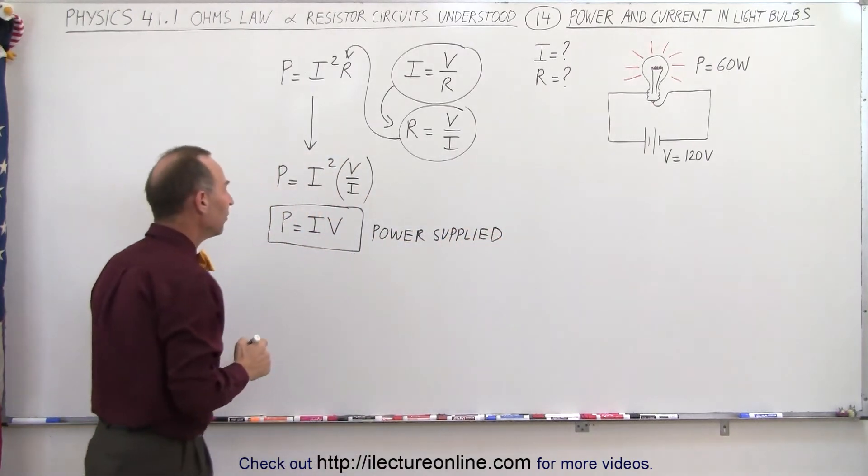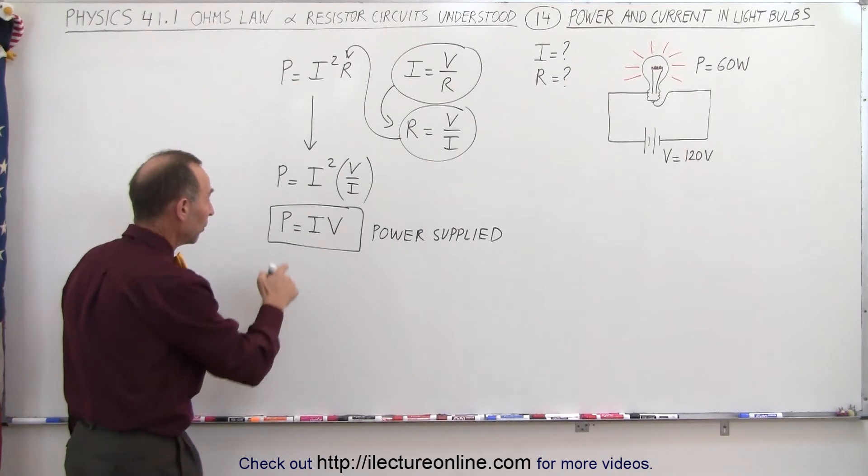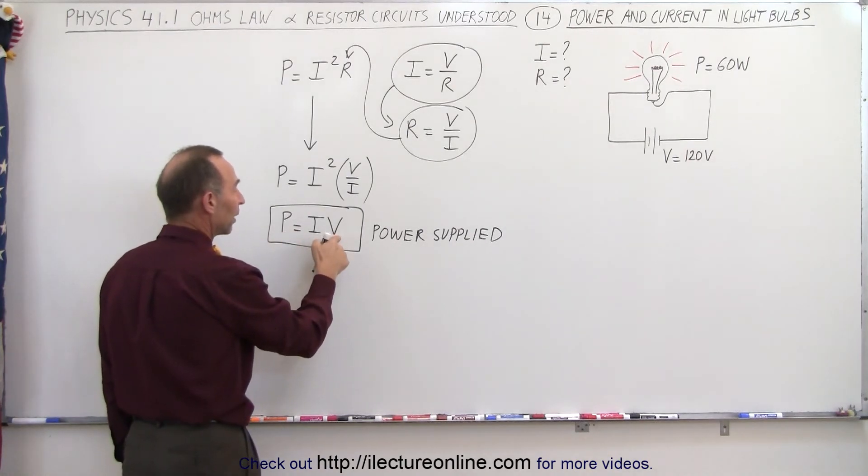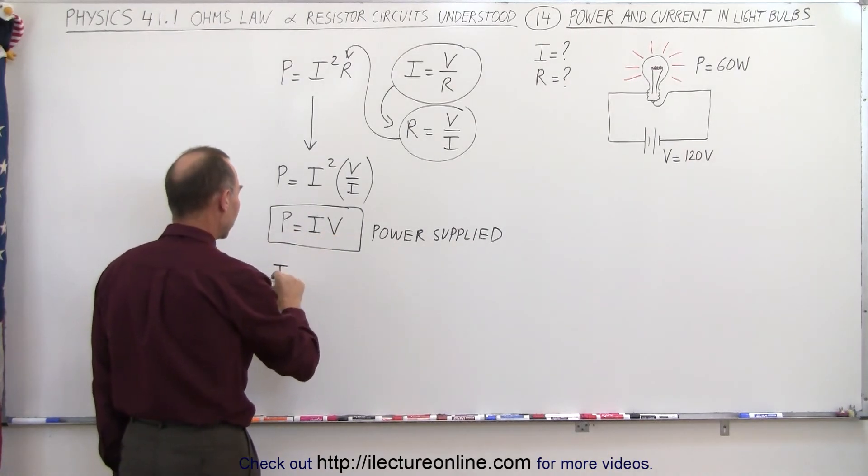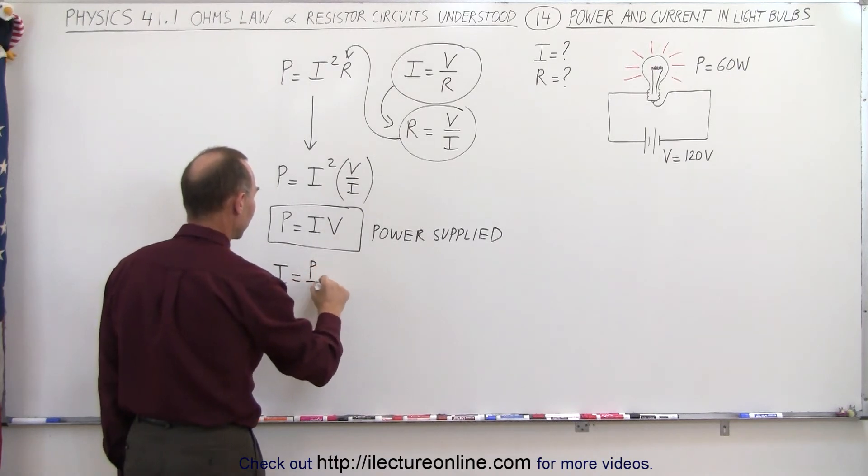Now from that we can then say, well if we know the power rating of the light bulb and we know the voltage applied to the light bulb, we can then take I which is equal to the power divided by the voltage.